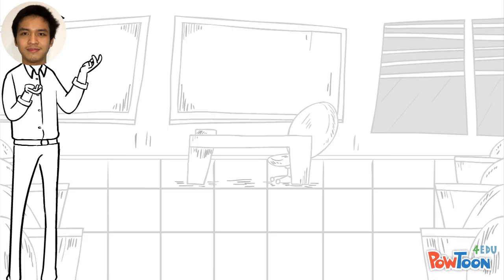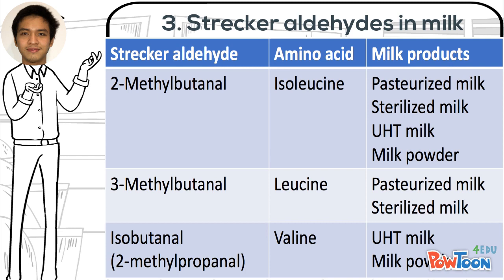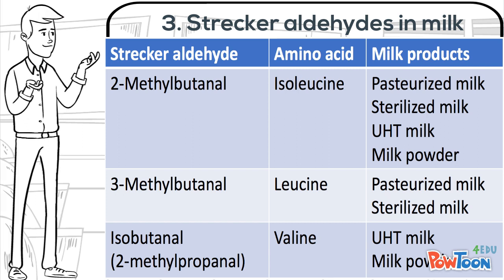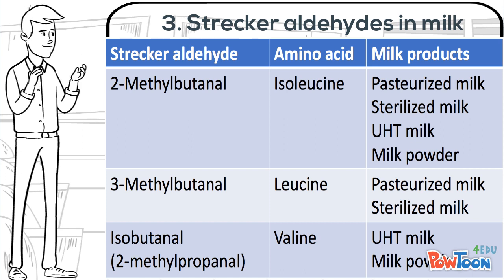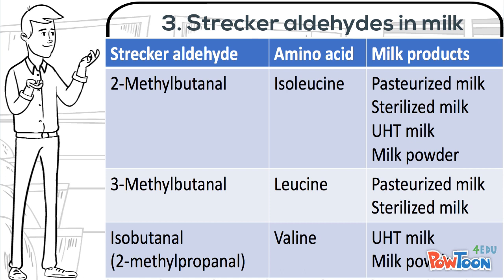This table shows some Strecker aldehydes detected in some types of milk. 2-methylbutanal formed in Strecker degradation of isoleucine was found in pasteurized, sterilized, ultra-high temperature treated milk, and milk powder. Another aldehyde, 3-methylbutanal, generated from leucine, was detected in pasteurized and sterilized milk. Isobutanal, generated from valine, was found in ultra-high temperature processing milk and milk powder.